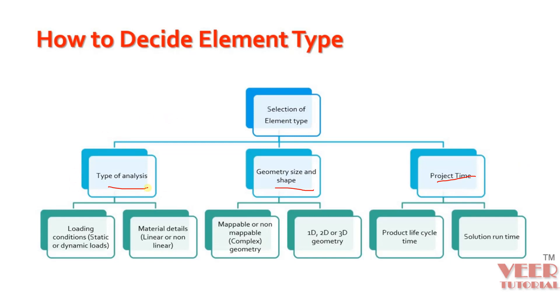Now let's understand about this type of analysis. As we know, we have multiple types of analysis, and basically it is called static or dynamic. We can break this type of analysis by loading condition or material type of analysis: linear or non-linear, and static or dynamic. And then with respect to the geometry, shape and size, we can consider 1D, 2D, and 3D geometry, and then mappable or non-mappable. Mappable means the geometry which is not complex, and non-mappable is a very complex geometry. And then project length time. Sometimes we have to submit the project in very little time, so here we need to use the type of element which takes lesser time to solve.